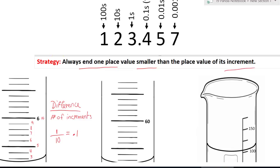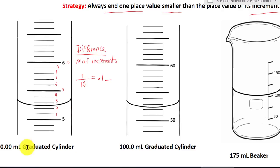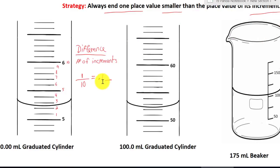Let's go back to the strategy: always end one place value smaller than the place value of its increment. So what is smaller than tenths? Hundredths. For this device, it will always end at the hundredths — there will always be two decimal places.